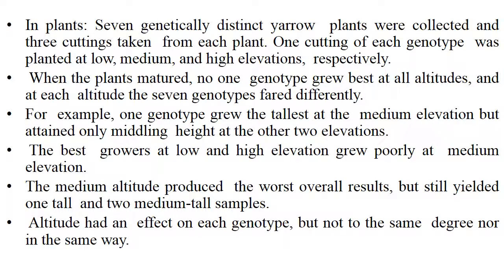In plants, seven genetically distinct yellow plants were collected and three cuttings taken from each plant. One cutting of each genotype was planted at low, medium and high elevations respectively. When the plants matured, no one genotype grew best at all altitudes, but at each altitude the seven genotypes fared differently. For example, one genotype grew the tallest at medium elevation but attained only middling height at the other two elevations. The best growers at low and high elevation grew poorly at medium elevation. The medium altitude produced the worst overall results but still yielded one tall and two medium-tall samples. This means altitude has an effect on each genotype, but not to the same degree nor in the same way.